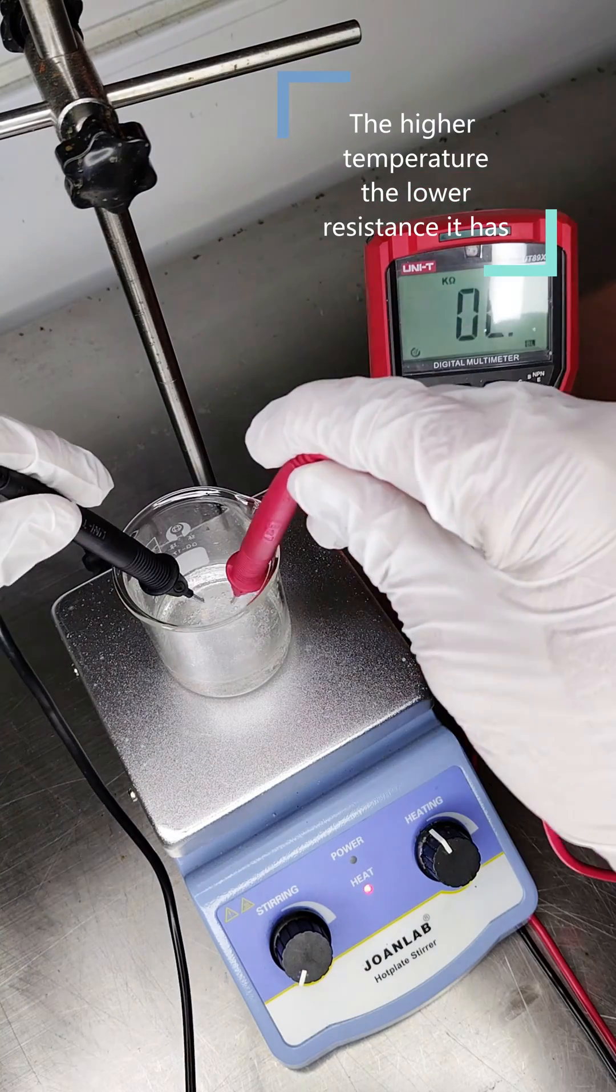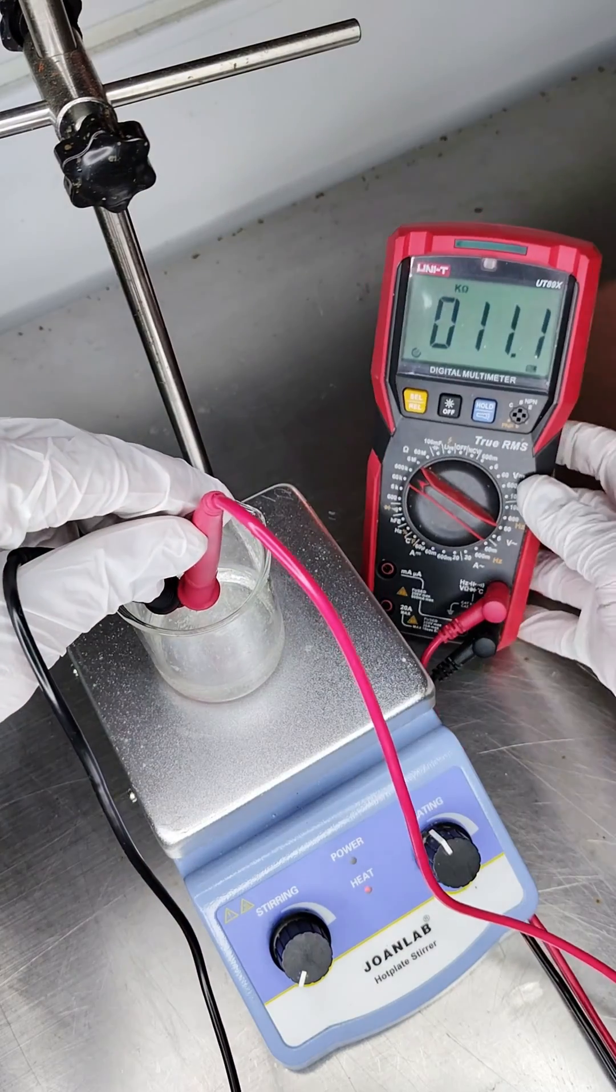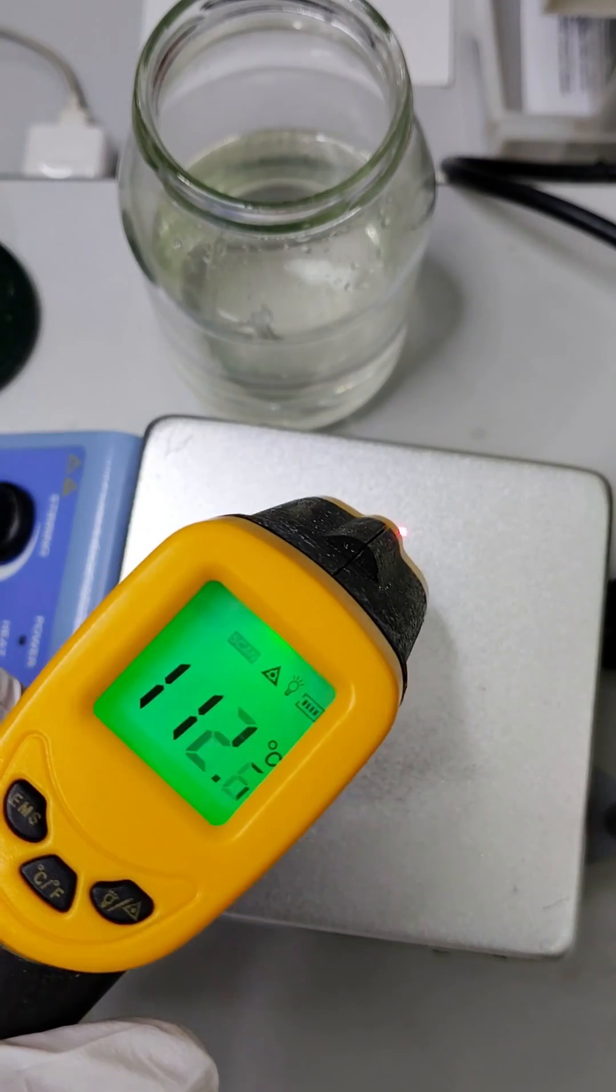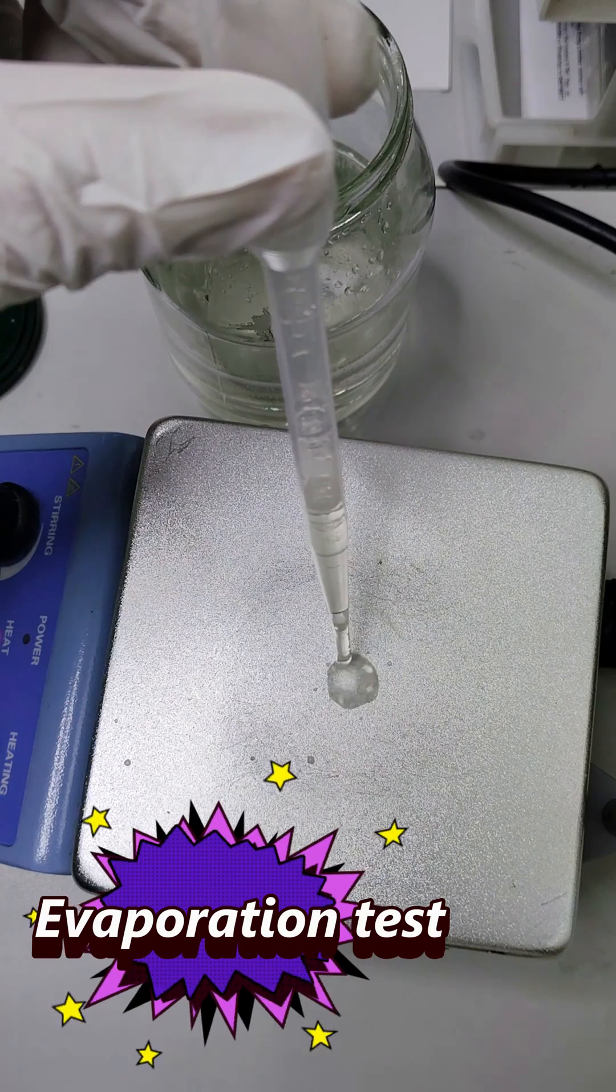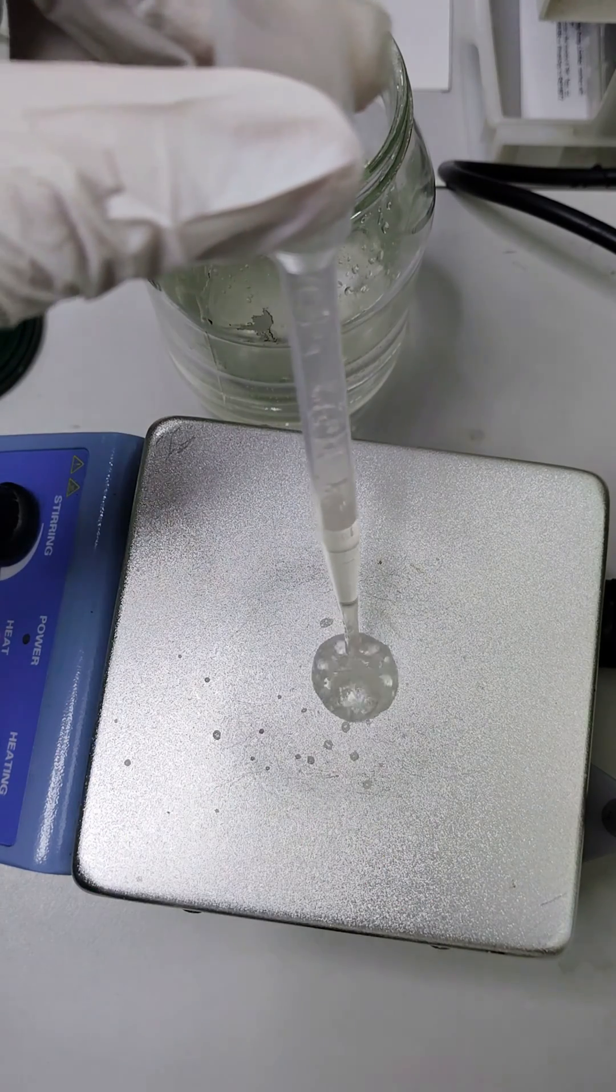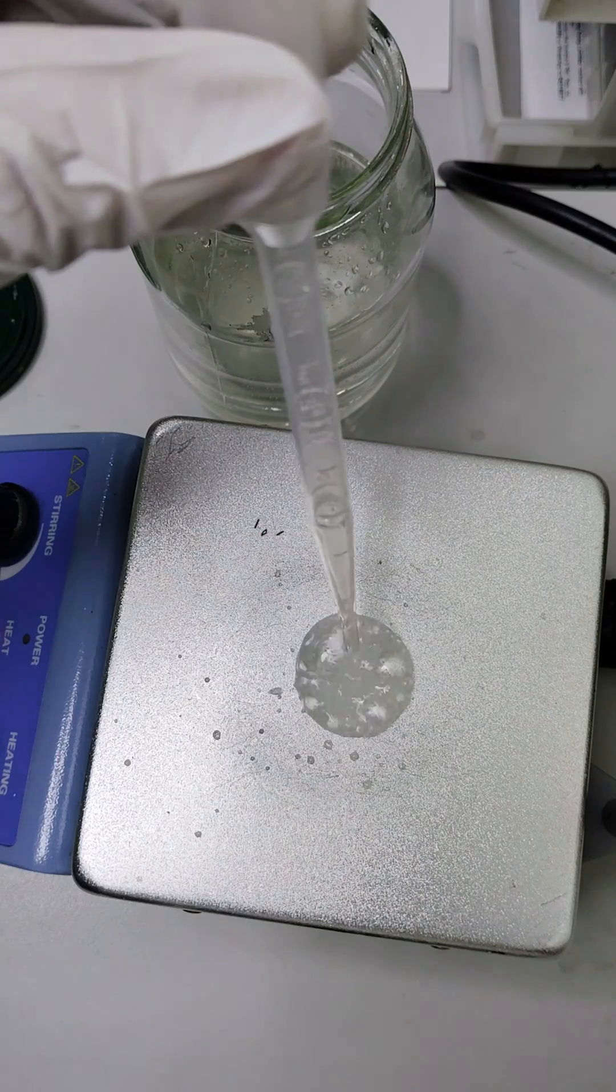Aluminum ionic liquids are a fascinating class of compounds that consist of cations containing aluminum atoms and various anions. These unique liquids offer exceptional properties such as high thermal stability, low volatility, and excellent conductivity.